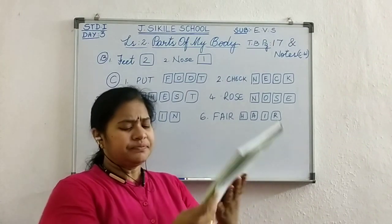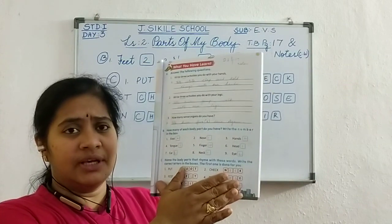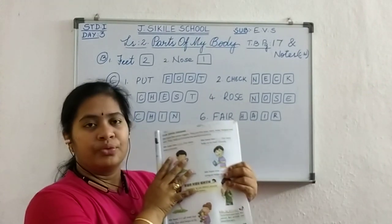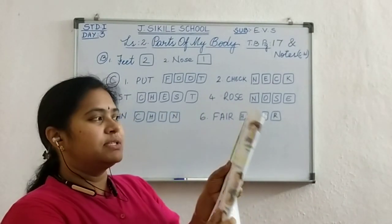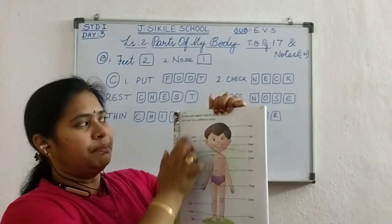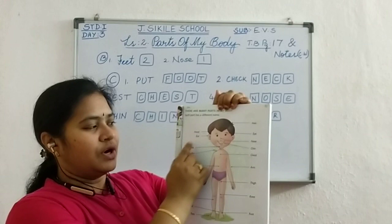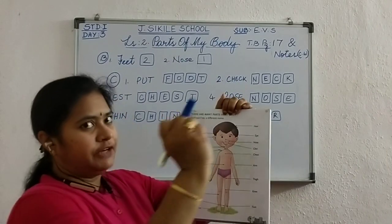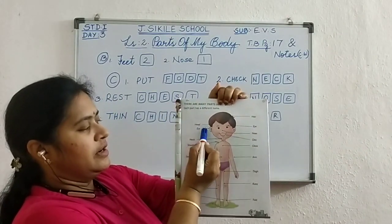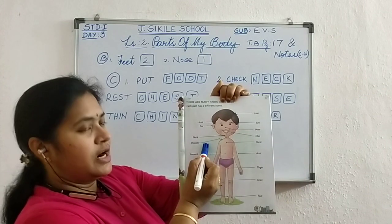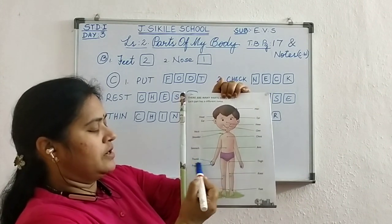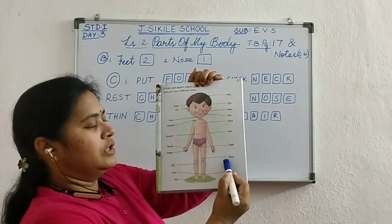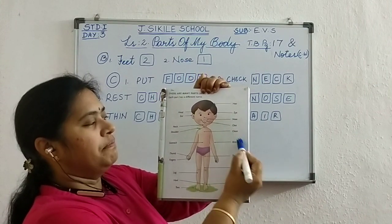Before closing, I want you to underline the important new words. Here we have different parts of our body — all these spellings you have to underline with your pencil. Head, ear, neck, shoulder, stomach, thumb, fingers, leg, heel, toes, foot, knee, thigh, arm, chest.